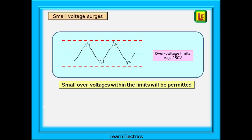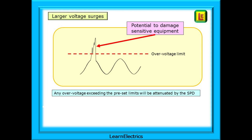What is an acceptable limit for voltage surges? For domestic installations this is set at 250 volts, and SPDs will generally ignore anything below this. Surges above 250 volts have the potential to damage sensitive equipment, and we need to know that any overvoltage exceeding this 250 volt preset limit will be safely and efficiently attenuated by the SPD.